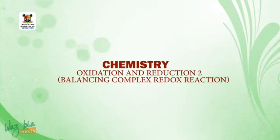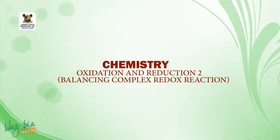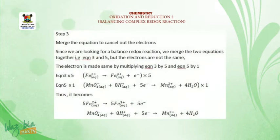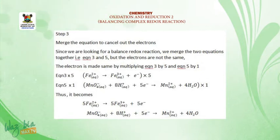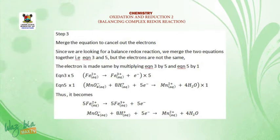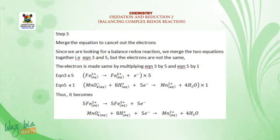Welcome back. We continue where we stopped — at step 2. Now we go to step 3: merge the equations to cancel out the electrons. Since we are looking for a balanced redox reaction, we merge equation 3 and equation 5 together. The electrons are made equal by multiplying equation 3 by 5 and equation 5 by 1.